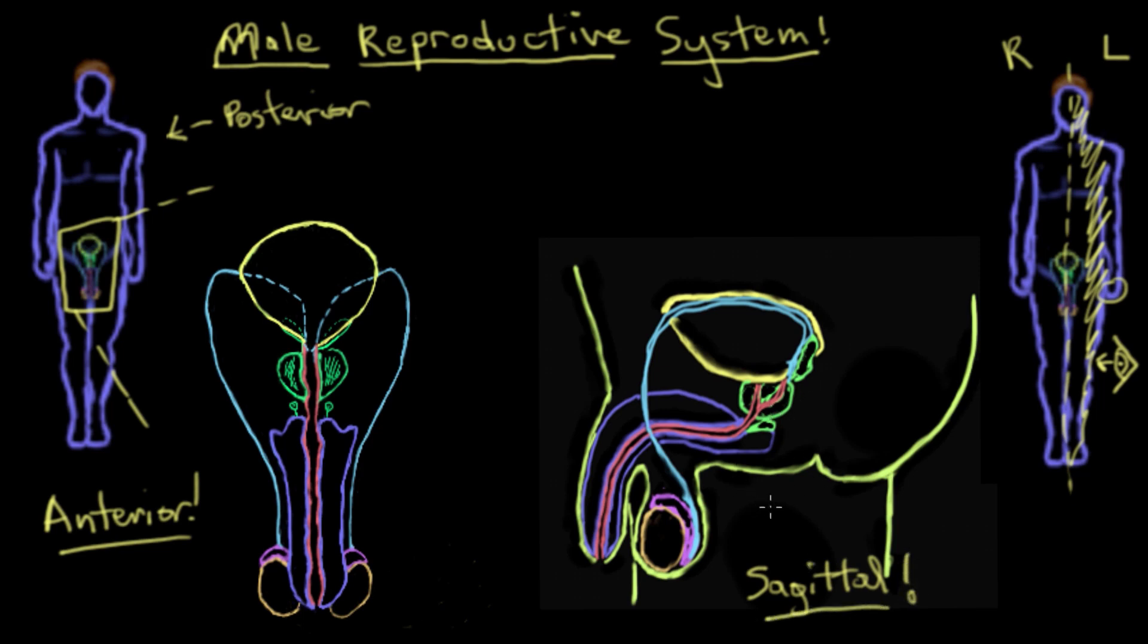To reorient you, this here in the background, this is the right leg, because remember we're looking this way. So those are the two views that are important when we're learning about the male reproductive system.